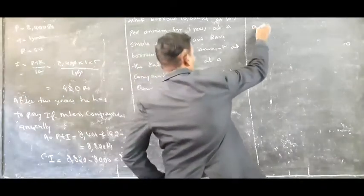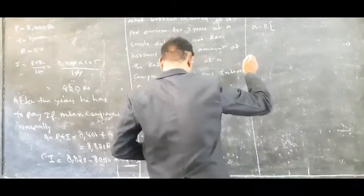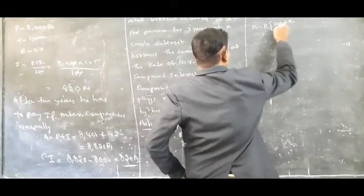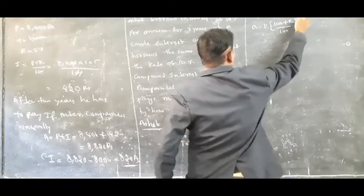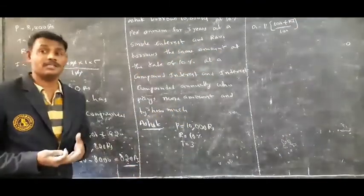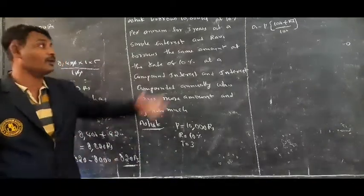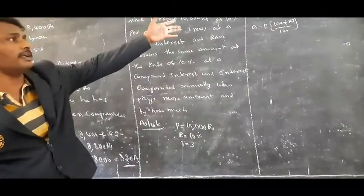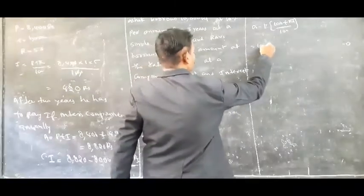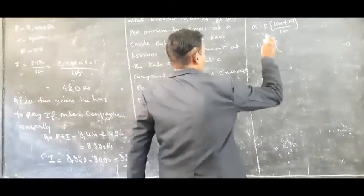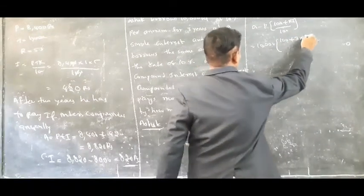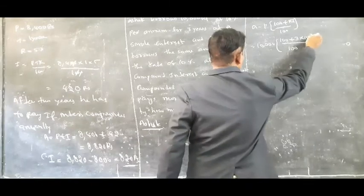In simple interest, the formula to find total amount is A is equal to P bracket 100 plus RT by 100. P is 10,000 rupees, 100 plus R is 10, T is 3 years, so 100 plus 30 equals 130. Two zeros cancel. It is nothing but 13,000 rupees.